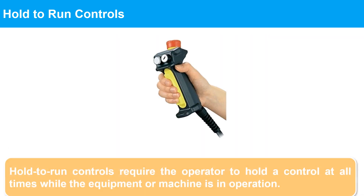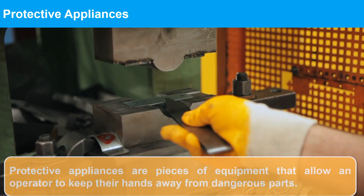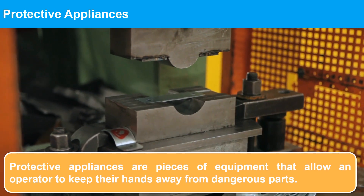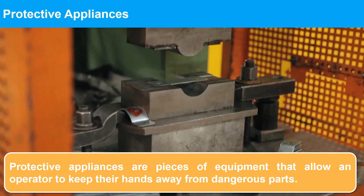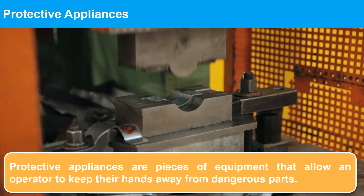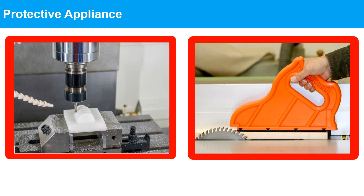Hold-to-run controls require the operator to hold a control at all times while the equipment or machine is in operation. Releasing the control will disconnect power from the machine and it will cease to function. Protective appliances are pieces of equipment that allow an operator to keep their hands away from dangerous parts. They include clamps, jigs, and push sticks.